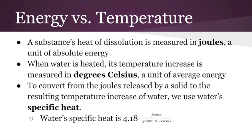To convert from the joules released by the dissociation of an ionic solid to the resulting temperature change of water, we use water's specific heat. This is the amount of energy, in joules, needed to raise 1 gram of water by 1 degree Celsius. Water's specific heat is 4.18 joules per gram per degree Celsius.